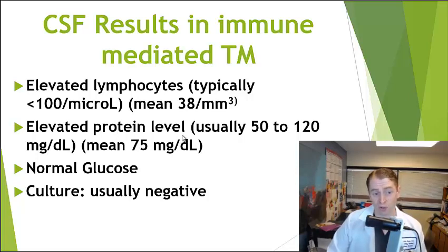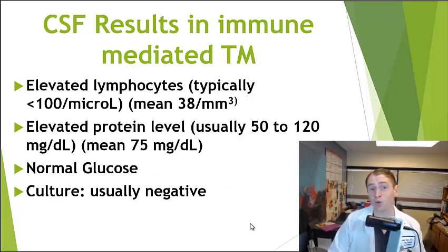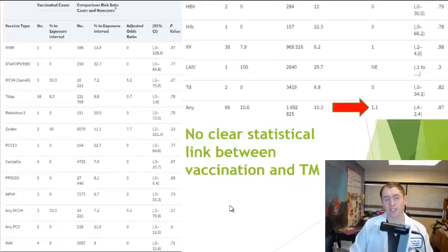Generally the protein is elevated — normal is 15 to 45 mg per deciliter, and the average in this study was 75. Usually the glucose or sugar is normal, and culture for routine bacterial infections is generally normal. There are specialized tests in the spinal fluid to look for causes such as herpes, CMV, or varicella.